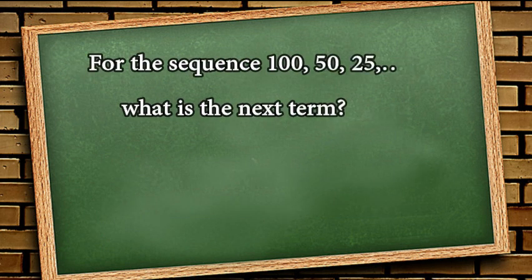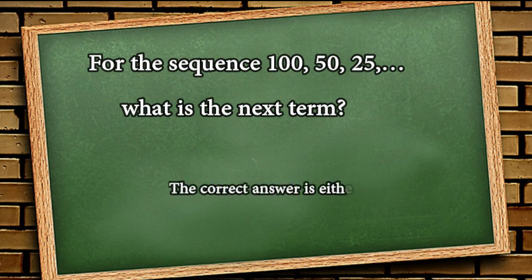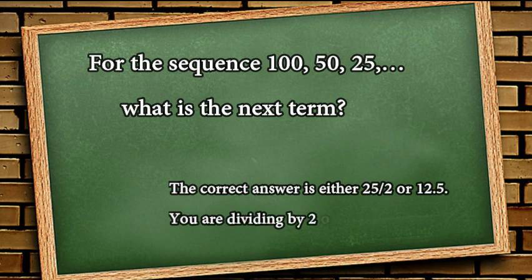For the sequence 150, 25, what is the next term? The correct answer is either 25 over 2 or 12.5. You are dividing by 2 or multiplying by 1 half.